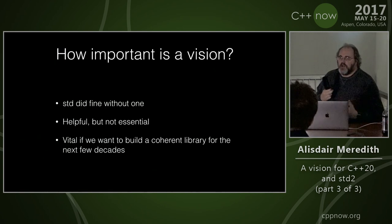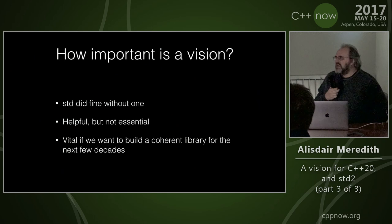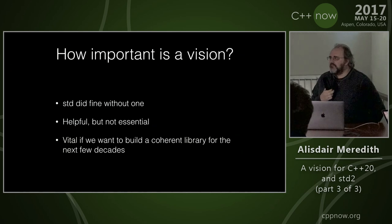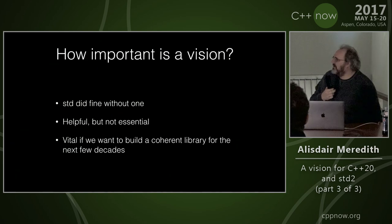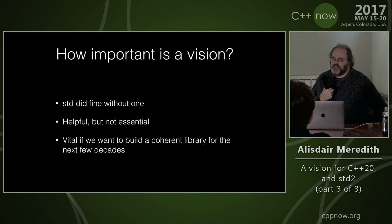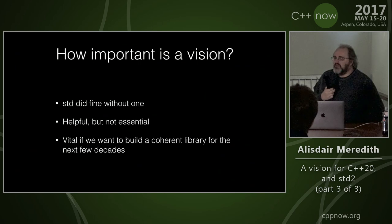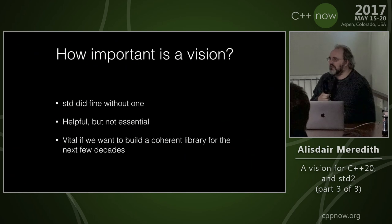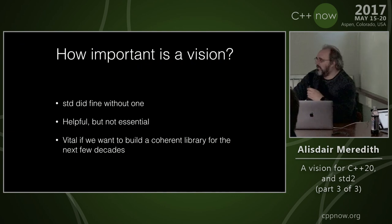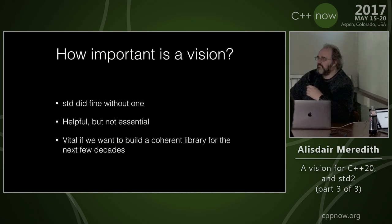The first question is: how important is it to have a vision for what we're going to do with the new standard library in the first place? There wasn't really an overriding vision for std — it just grew organically, and it seemed to work out mostly okay. We hit upon some pain points in my session yesterday, but the library is far from being a disaster. Perhaps it's still useful to have a vision even if we don't think it's vital, or perhaps it really is vital to have a coherent view as we set out on the new library — if we're building the foundation for the next few decades of C++, we want to be sure the whole thing is built on a coherent foundation.